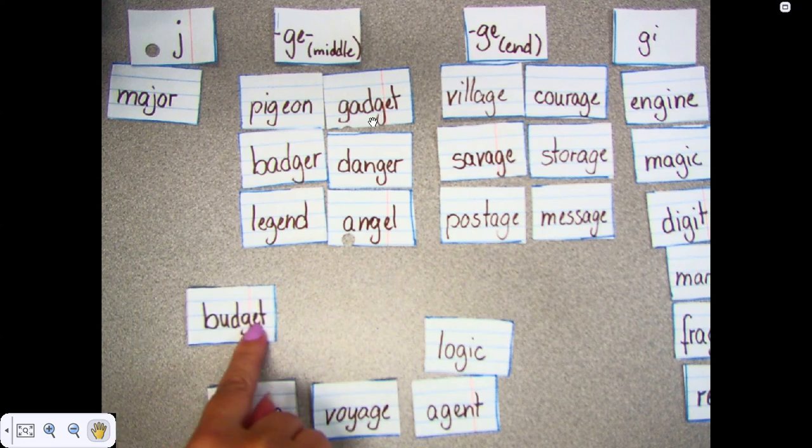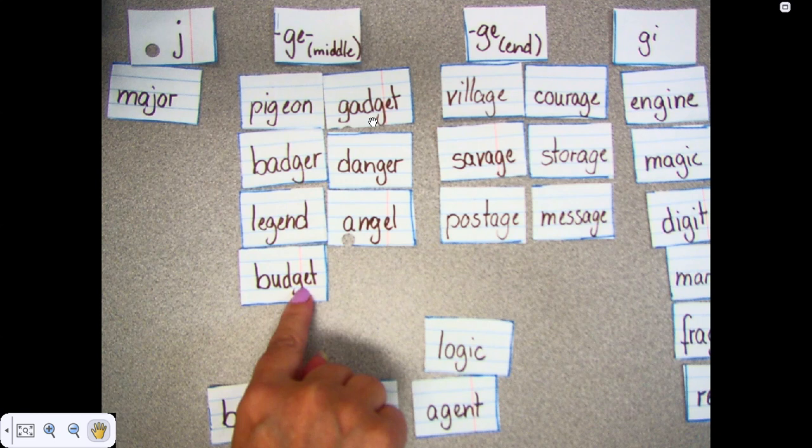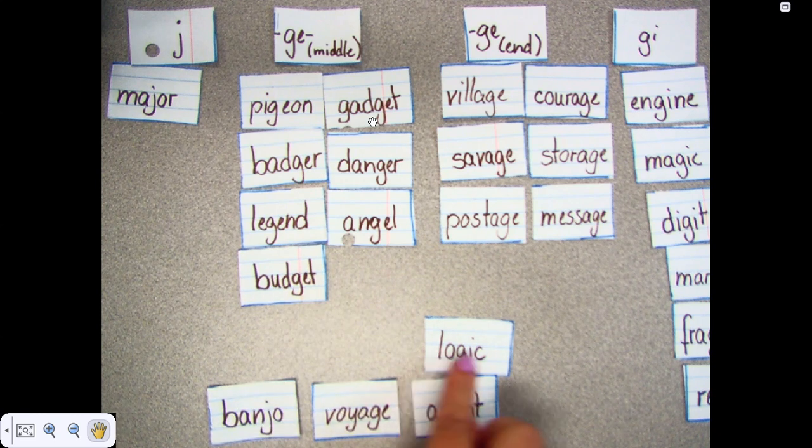Budget. It has a T at the end, so the J sound is right before that, so that's considered the middle.